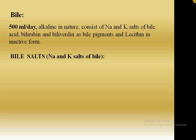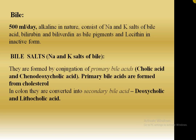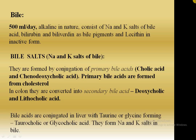Bile salts are sodium and potassium salts of bile acids. They are formed by conjugation of primary bile acids — cholic acid and chenodeoxycholic acid — which are formed from cholesterol. In the colon, primary bile acids are converted into secondary bile acids: deoxycholic acid and lithocholic acid. In the liver, primary bile acids are conjugated with taurine and glycine, forming taurocholic or glycocholic acid, then forming sodium and potassium salts of bile.